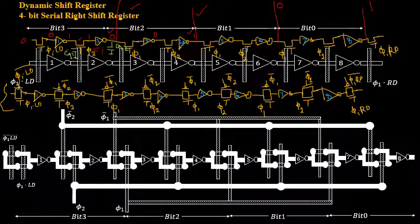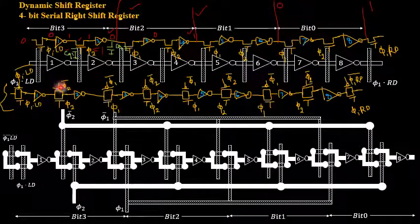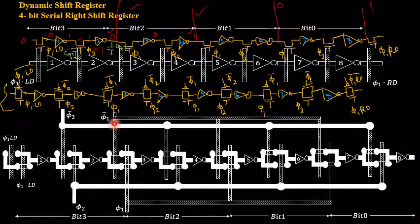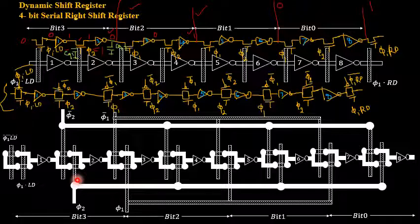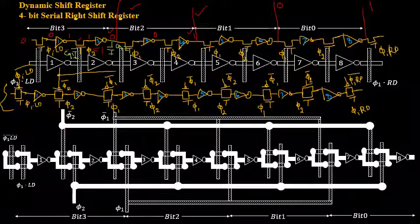The working operation remains the same as in the NMOS transistor logic case, but here you have one transmission gate with designation φ1.LD complement and φ1.LD. Cascade it with an inverter, then continue cascading with another transmission gate. These designs repeat — complement and non-complement signals, with φ2 complement for the PMOSFET and φ2 for the NMOSFET. Similarly, φ1 complement for the PMOSFET. All φ2 complement signals can be connected together.